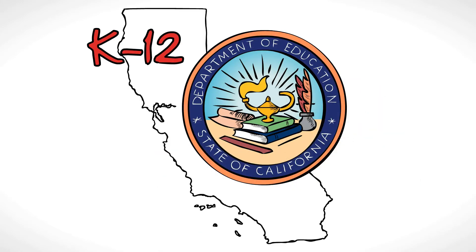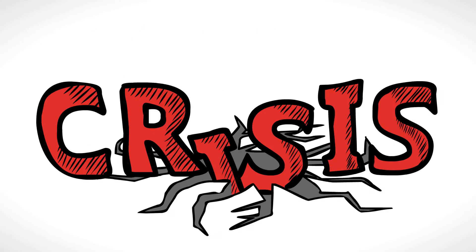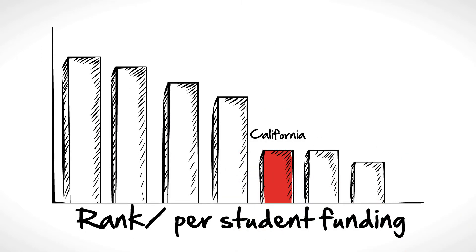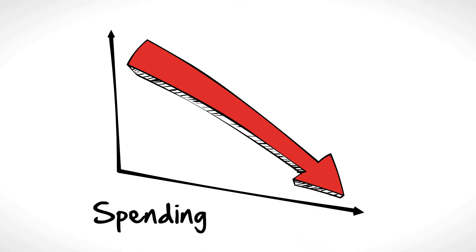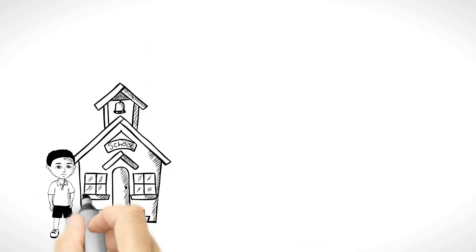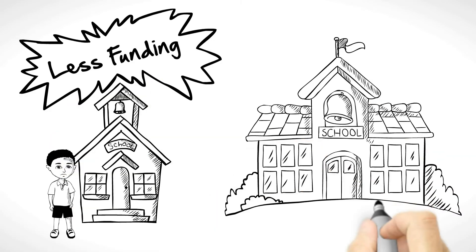K-12 education in California is in crisis. Not only does California rank near the bottom in per-student funding, and spending has been drastically cut, but students in low-income schools receive less funding than kids in well-to-do neighborhoods.